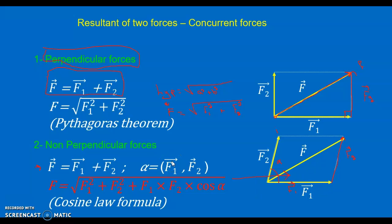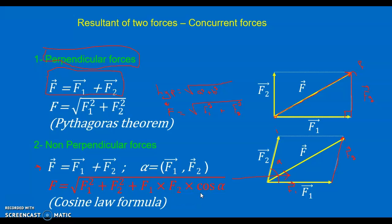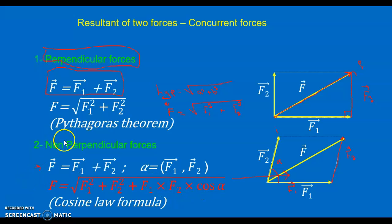The cosine rule resembles the Pythagorean theorem with an extra term. When the two vectors are perpendicular, alpha equals 90°, and cosine(90°) = 0, so the extra term cancels and we return to the Pythagorean theorem. Therefore the cosine rule is the general rule, and the Pythagorean theorem for right triangles is a special case. You are responsible for memorizing both rules and applying them to find the magnitude of the resultant force.